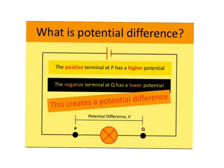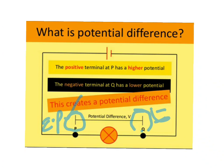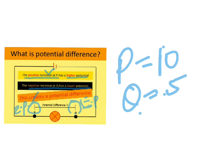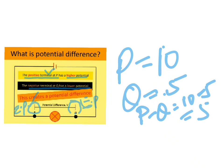Consider two terminals of a conductor: terminal P and terminal Q. Terminal P is positive, meaning it has higher electric potential, and terminal Q is negative, meaning it has lower electric potential. For example, if P has a potential of 10 and terminal Q has a potential of 5, the potential difference is P minus Q, that is 10 minus 5, which equals 5.